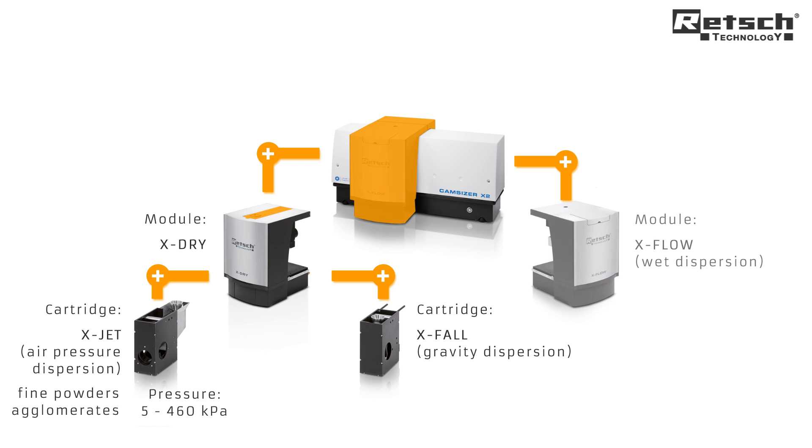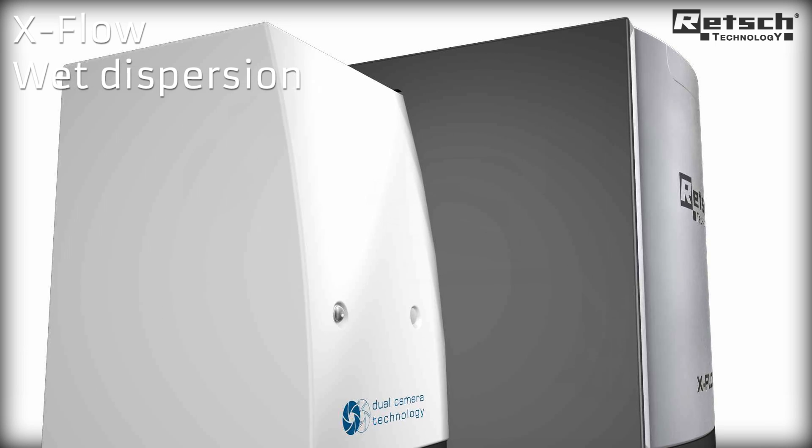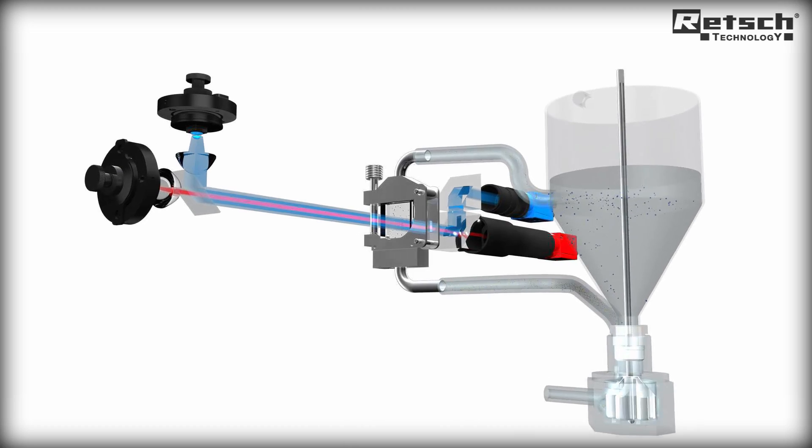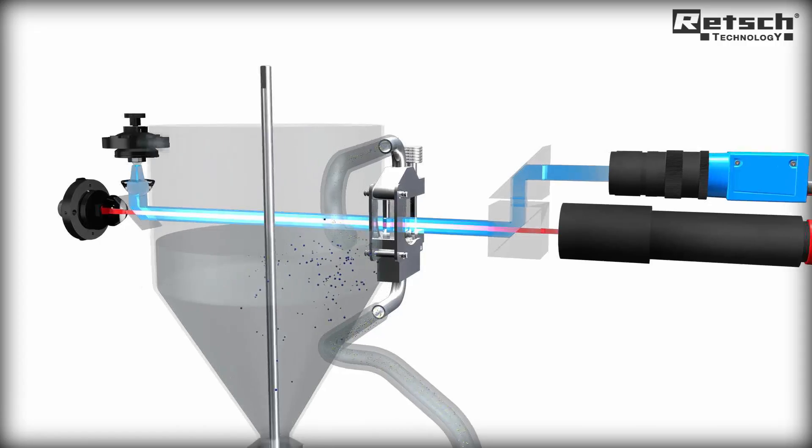With the X-Flow module, the CamSizer X2 offers the possibility of analyzing particles in suspension. The sample is dispersed in a liquid which circulates through the measurement system. This method is ideal for very fine particles in the lower micrometer range.